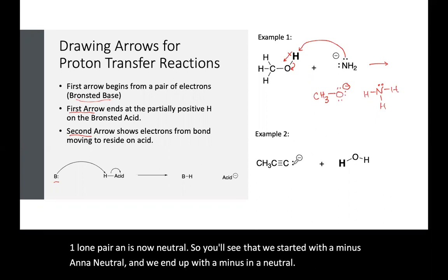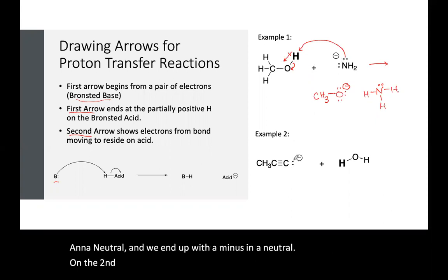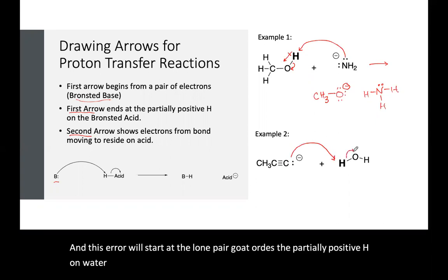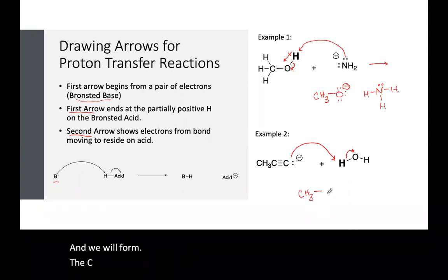On the second reaction, we have a lone pair on this carbon, and this arrow will start at the lone pair, go towards the partially positive H on water, break that pi bond, and we will form the CH3 carbon triple bond carbon bonded to the H.